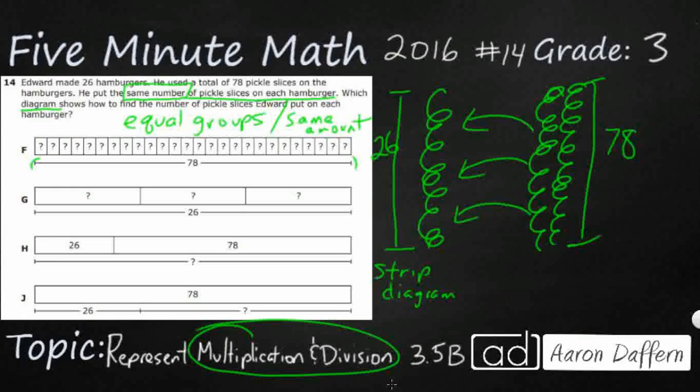Well, your total is always going to be this big number. So let me just put that right down here. So 78, that's the total number of pickle slices we have. And we are going to divide them up. We are going to split them up, separate them up into equal groups based on hamburgers.